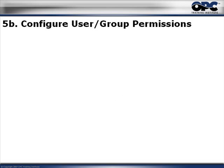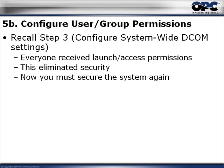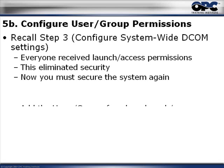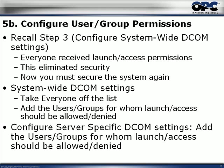Second, we're going to configure the user and group permissions. Remember that in step number three, when we configured the system-wide DCOM settings, we gave access to everyone — we gave them access to launch and to access all the applications. Now we have to take that back, because where is the security if everybody is allowed to launch, start, and access our data? It's not there. So go back into the system-wide DCOM settings, take everyone off the list, and add the specific users and groups that should actually get the launch and access permissions.